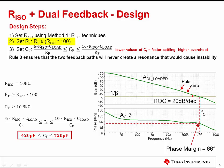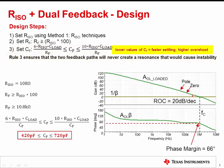Then, RF can be selected to any value greater than 100 times R-ISO in order to prevent interactions with R-ISO. The last step is to select a value of CF based on the range shown here. Using this range ensures that the two feedback paths never create a resonance that would cause instability. Smaller values for CF will result in faster settling times at the expense of overshoot for certain load ranges.